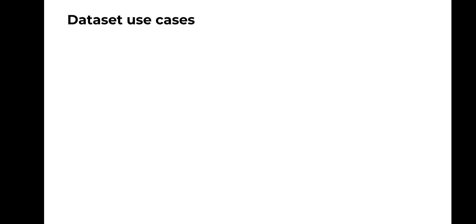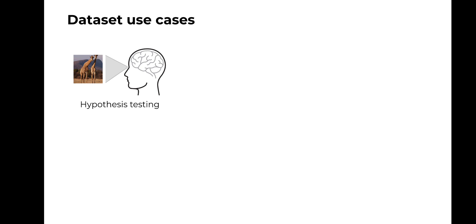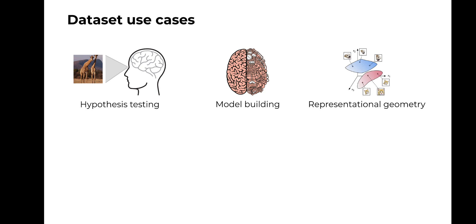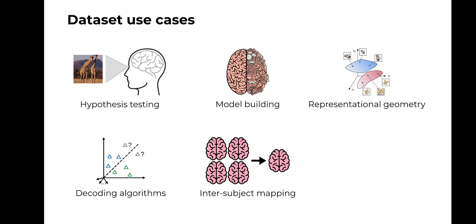We believe our EEG dataset to be a suitable candidate for several lines of research, including: testing hypotheses of visual object recognition mechanisms, since we now have a dataset which more than ever before samples the visual space; developing new high temporal resolution models and theories of vision, such as end-to-end encoding models; analyzing the representational geometry of visual objects; developing zero-shot identification and decoding algorithms; developing inter-subject mapping algorithms by combining the data of the ten different subjects; and contributing to the emergent field of neural AI, since our dataset is large enough to train deep learning models.